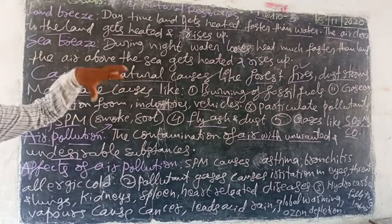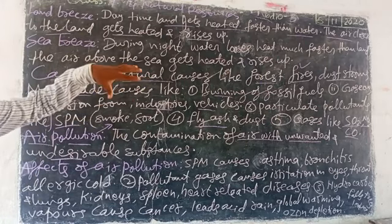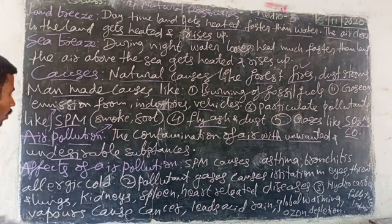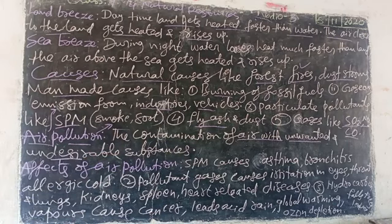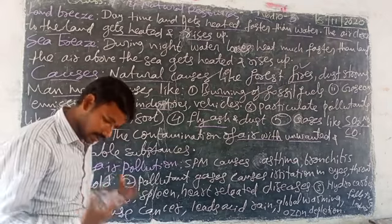Polluting substances include sulfur dioxide and other air pollutants. These are the substances that pollute the air.